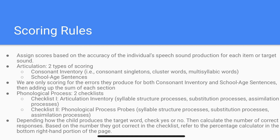The scores assigned are based on the accuracy of the individual's speech sound production for each target sound produced. The articulation section consists of two types of scoring: the consonant inventory, which includes consonant singletons, cluster words, and multisyllabic words; and the school-age sentences. We score only for the errors produced in both the consonant inventory and school-age sentences, and then add up the sum of each section.